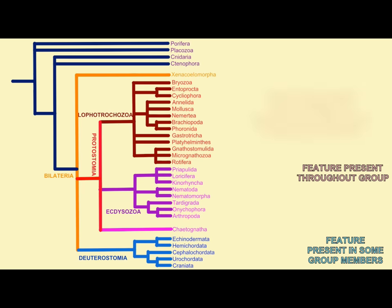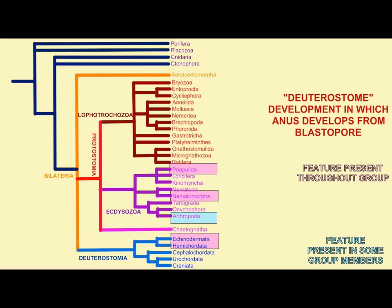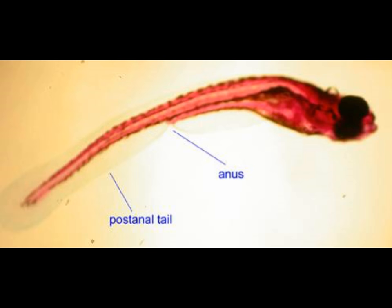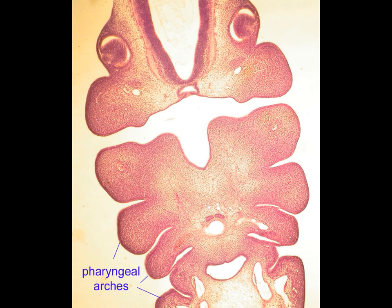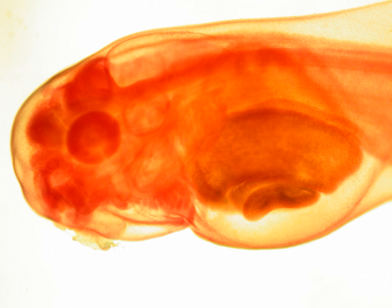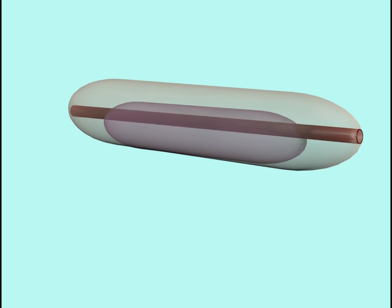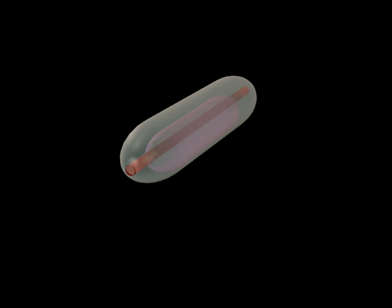For example, there are a number of protostomes in which the anus develops first, and the majority of deuterostomes actually do not use the blastopore as their anus. That develops from a second structure, and the mouth might actually vary in its embryological origin between the chordates, as a result of the great expansion of the forebrain compared to the non-chordate deuterostomes. So the position of the anus and the mouth in this phylogeny is difficult.